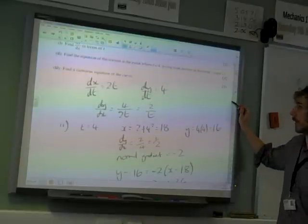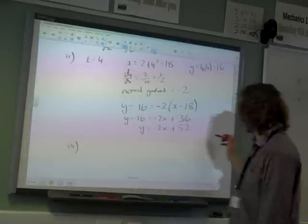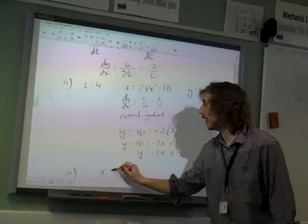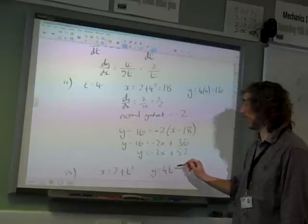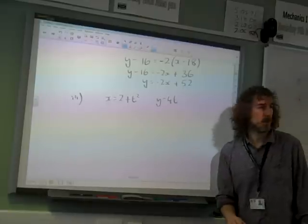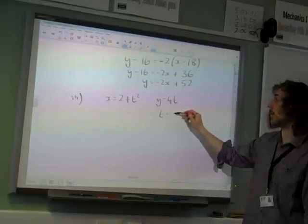Find the Cartesian equation of the curve. So for part 3, what have we got up here? x is 2 plus t squared, y is 4t. So this is just about eliminating t. Where it seems like an easy way to go with this is to say that t equals y over 4 from that expression there.